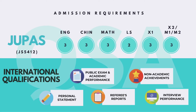For admission requirements, if you are applying through the JUPAS system, we require four core subjects and two electives. If you have taken M1 or M2, the subject will be counted as one elective and the score will be multiplied by 1.5. We also double count the score of English and mathematics. If you are an international applicant, we will review both your academic and non-academic performance, your personal statement, referees' reports, and interview performance. You may also check out the respective admissions requirements on the admissions office website at join.ust.hk.